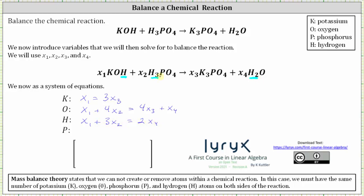For the last equation, we look at phosphorus. We have one atom of phosphorus on the left and one on the right. Therefore, one times x sub two must equal one times x sub three, or x sub two must equal x sub three.